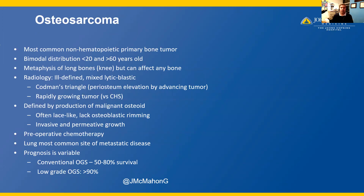Osteosarcomas are generally treated with preoperative or neoadjuvant chemotherapy. There are a couple of subtypes that are not subject to neoadjuvant chemotherapy, but by and large, osteosarcoma is a tumor that undergoes neoadjuvant chemotherapy. Lung is the most common site of metastatic disease. 50 to 80% survival is often seen in most patients with conventional osteosarcoma. Those who have low-grade osteosarcoma subtypes will have slightly better prognoses with greater than 90% survival.